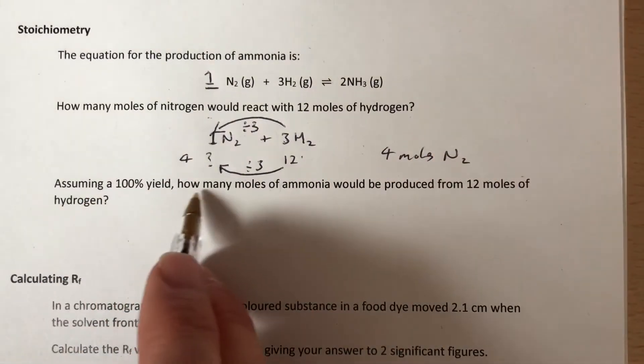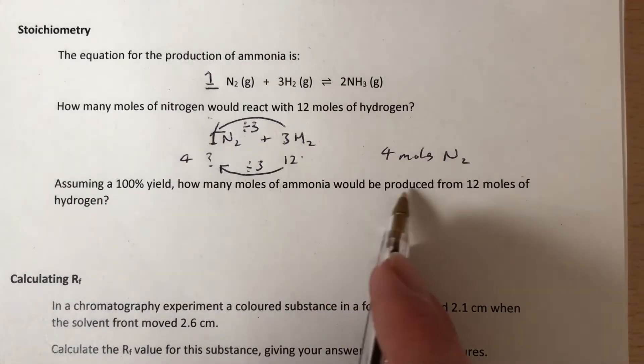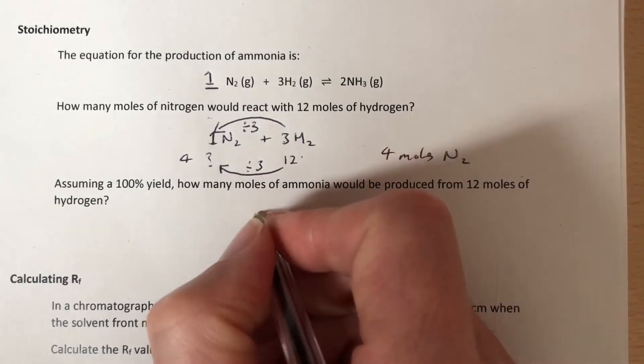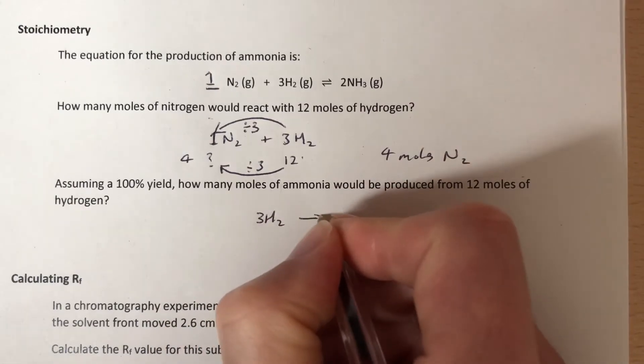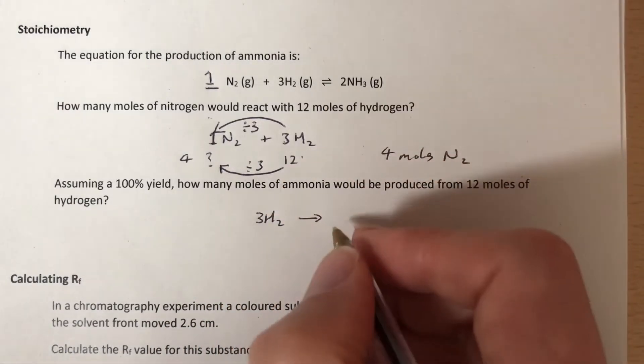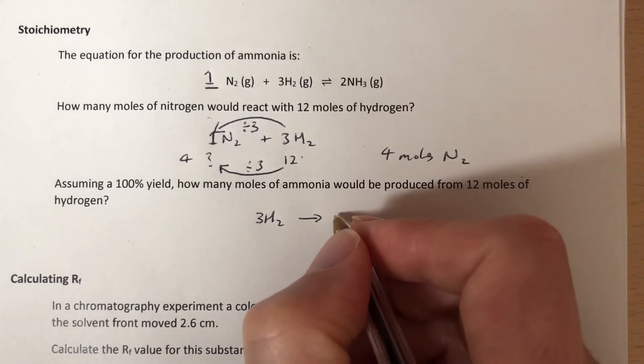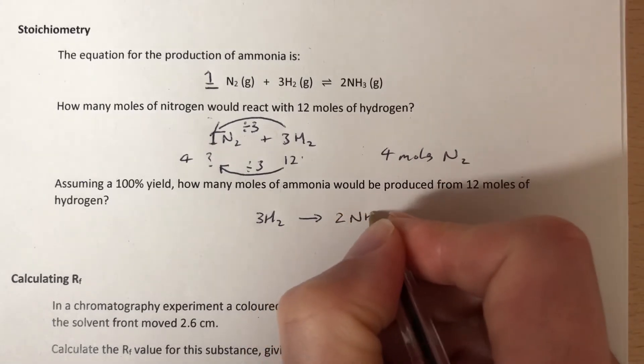So assuming 100% yield, how many moles of ammonia would be produced from 12 moles of hydrogen? So this time we've got three hydrogens, we're assuming 100% yield, so I'll just put an arrow there, I know this is a reversible reaction, but we're assuming 100% yield, and that's going to make two ammonia.